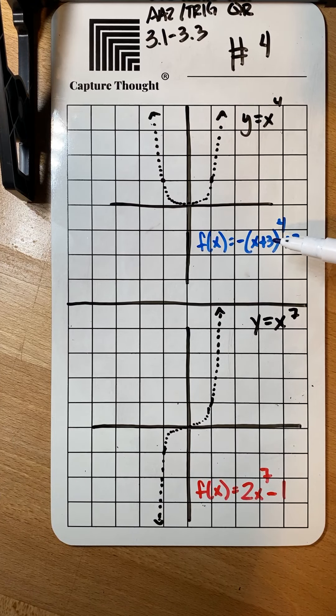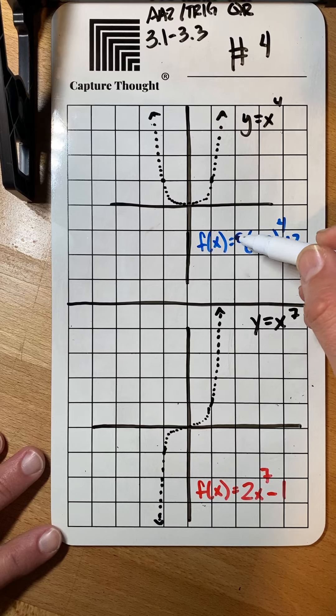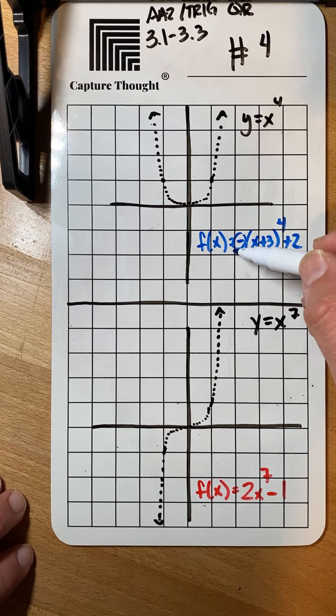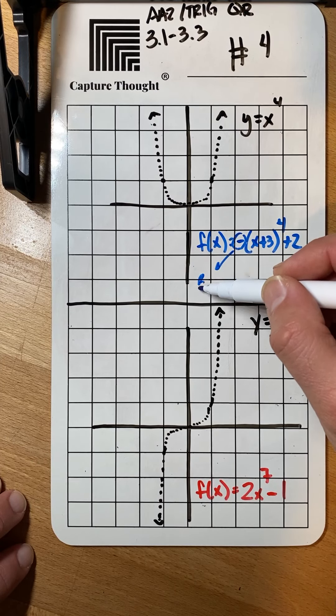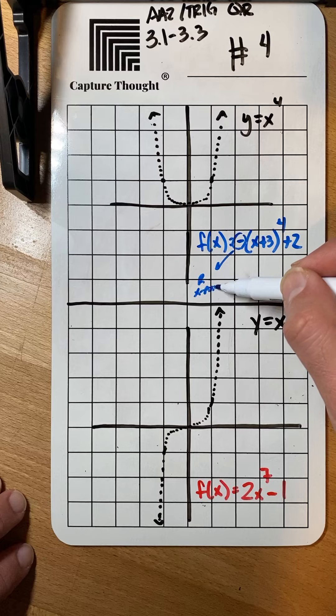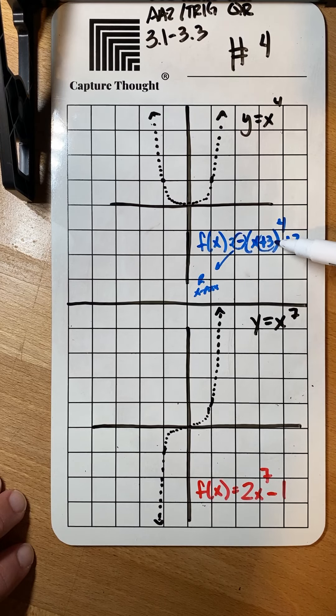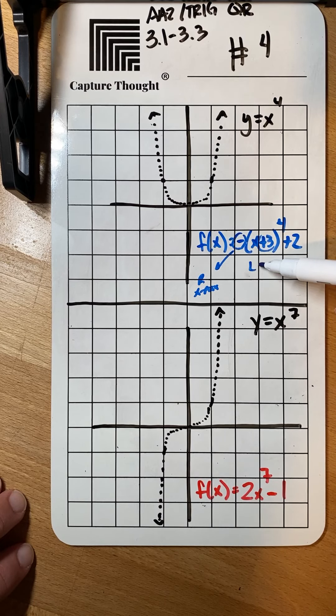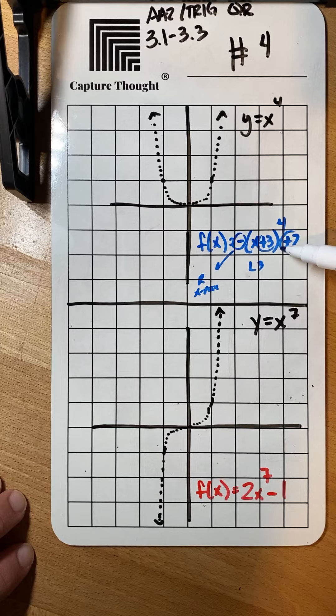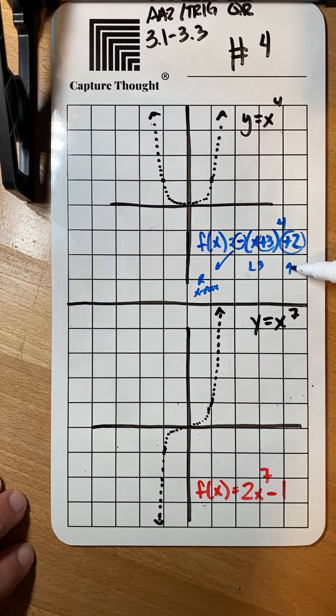For part a you want to be able to recognize that this minus sign is going to take it and do a reflection over the x-axis. This plus three is going to move your entire graph to the left three units and this plus two is going to move your graph up two units.